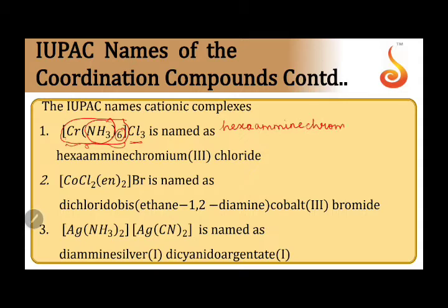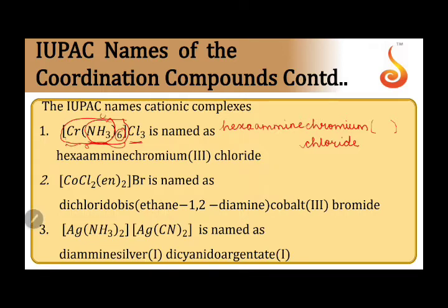The central metal is chromium. We will not be changing the ending to '-ate' because this is a cationic complex — that rule applies only in the case of anionic complexes. Now we write the oxidation number in brackets, followed by the anionic part: chloride. Let's calculate the oxidation number of chromium. Ammonia is neutral, so zero. Chlorine is minus one, and there are three chlorines, giving minus three. Hence chromium's oxidation number should be plus three, written as (III) in Roman numerals.